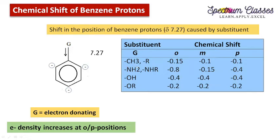From this table of representative electron donating groups, if G is CH3 — that is, the toluene molecule — the shift from the base value of benzene protons at 7.27 ppm is −0.17 at the ortho position, so you read it as 7.27 − 0.15. At the meta position it is 7.27 − 0.10, and at the para position it is 7.27 − 0.10. You may wonder why there is a similar effect at meta and para — it depends on how efficiently the group can donate electrons.